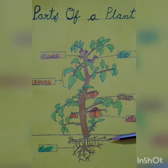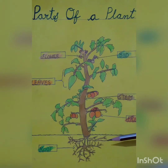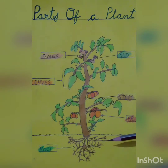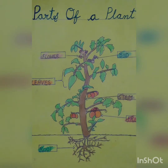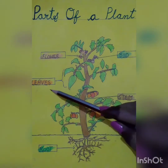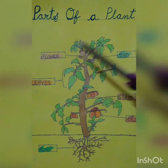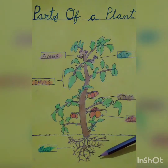And the parts of the plant that are found below the soil, which we cannot see, are known as the root of the plant. So there are mainly five different parts of a plant: fruit, stem, leaves, flower, and root.